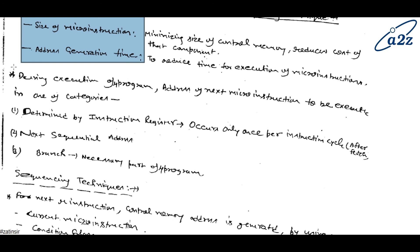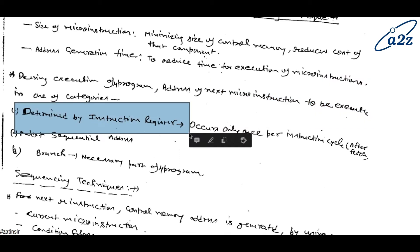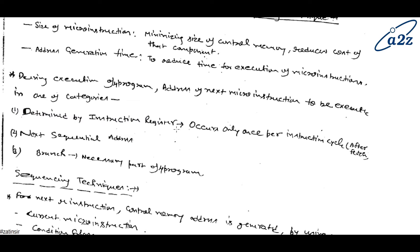During execution of a program, the address of the next micro instruction to be executed must be determined, because until you have the address of the next micro instruction, you won't know which instruction comes next in the program, and without that, execution cannot proceed. The address of the next micro instruction can be determined by the instruction register. This happens once per instruction cycle — after you fetch an instruction, its address is read, then the operation is performed, then the next instruction is fetched.